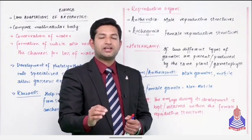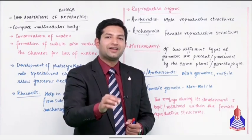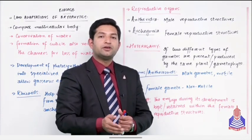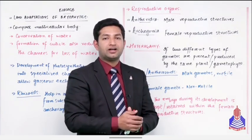Within it, three distinct structures are visible: foot, seta, and capsule. But at the same time, the sporophyte will stay attached to the gametophyte generation. All right students, then from here the next point begins.